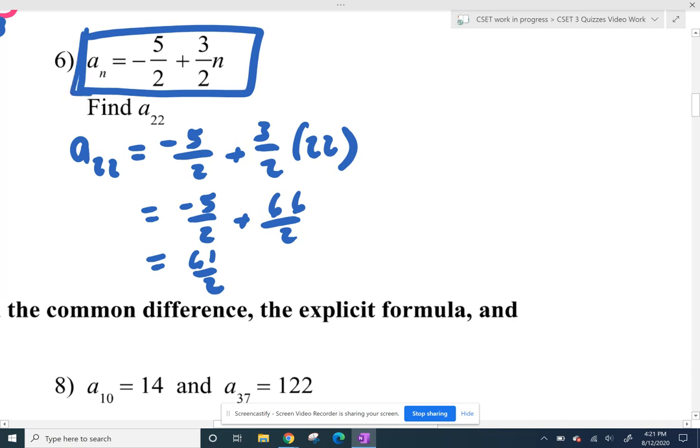So when they give us an explicit formula, that just means you can plug in n and get your answer explicitly, quick, easy, bam. If they wanted to know what your common difference was, your common difference is the same thing as your slope. So the d, you kept adding 3 halves.